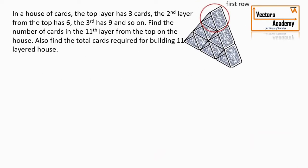Let's take a quick example to understand Arithmetic Progression better. In this question there is a house of cards. The top layer requires 3 cards, the second layer from the top requires 6 cards, the third layer requires 9, and so on. We have to find how many cards are required in the 11th row from the top, and also the total number of cards required to build a house of 11 rows. The sequence of cards per row is 3, 6, 9 — which is an AP with first term a = 3 and common difference d = 3. We need to find A11 and S11.